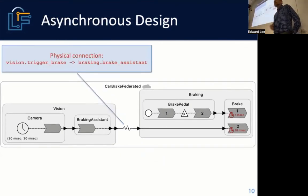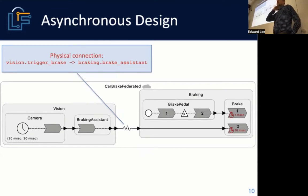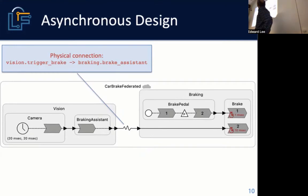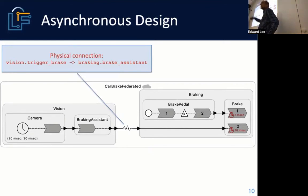Using Docker containers gives you a really convenient way to do chaos engineering. But none of this is what people do today. You can build a Lingua Franca program that does what people do today — it uses what's called the physical connection, which is a tilde-greater-than rather than a dash-greater-than notation.